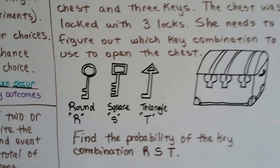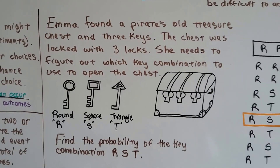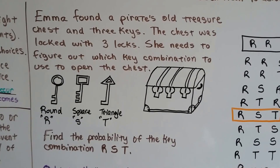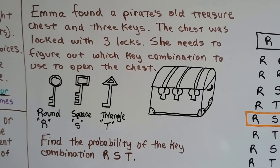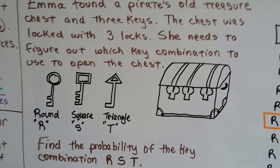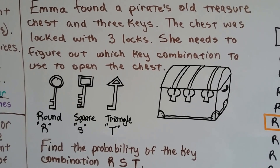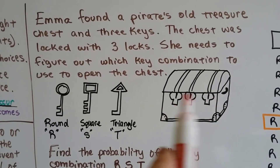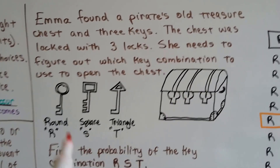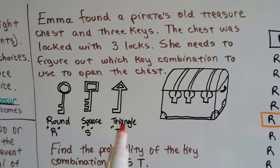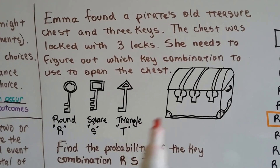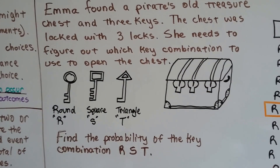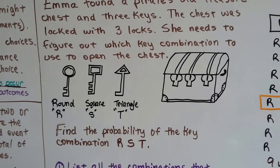Emma found a pirate's old treasure chest and three keys, and the chest was locked with three locks. She needs to figure out which key combination will open the chest. There are three locks, and she has a round key, a square key, and a triangle key — all different. She has to figure out which combination will open the chest to see if there's treasure inside.